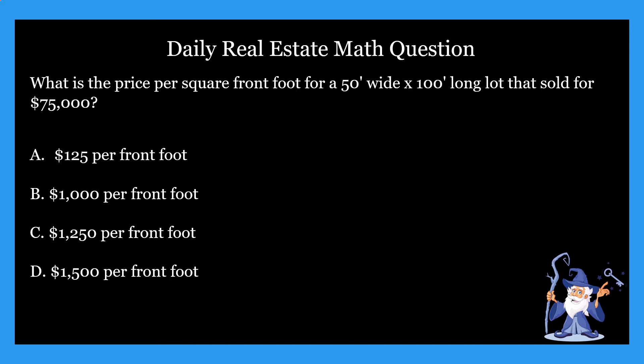For all cost or price per square foot, per acre, or per front foot problems — when converting measurements to a cost or value per unit — you have to divide the cost by the unit of measurement. In real estate, front foot or front footage is a property measurement of the front footage of a parcel of property adjoining the street or water. When a lot is described, the front feet are always given first. That's the case wherever you go. So in this case, that 50 is the front feet.